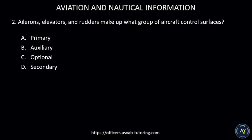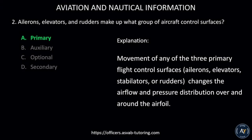Number two: Ailerons, elevators, and rudders make up what group of aircraft control surfaces? A) Primary, B) Auxiliary, C) Optional, or D) Secondary. The correct answer is A, primary. The movement of any of the three primary flight control surfaces — ailerons, elevators, stabilators, or rudders — changes the airflow and pressure distribution over and around the airfoil.